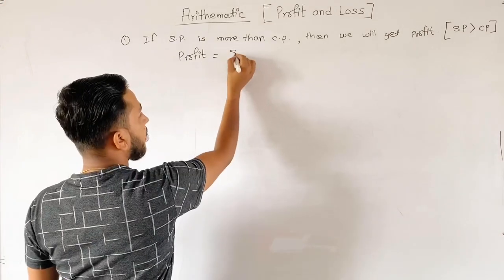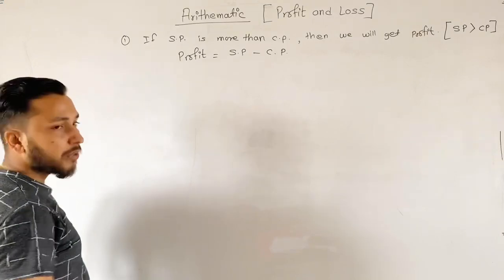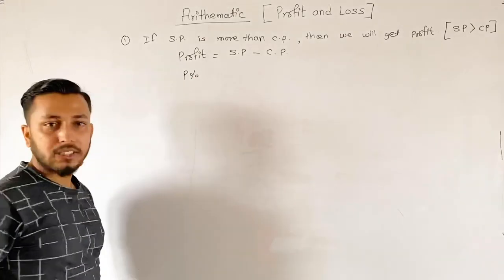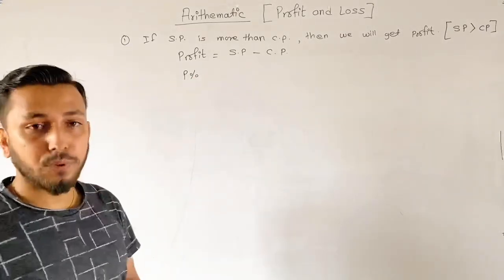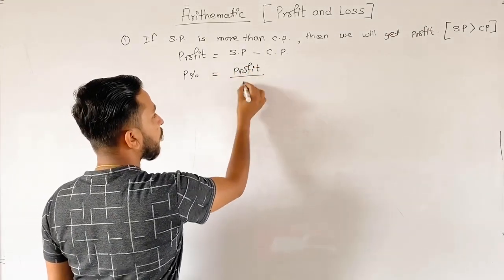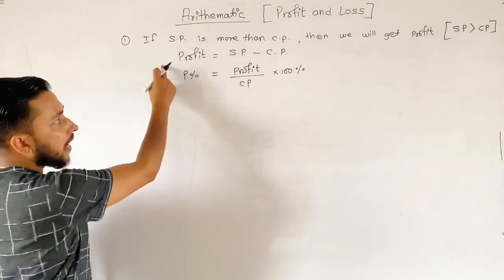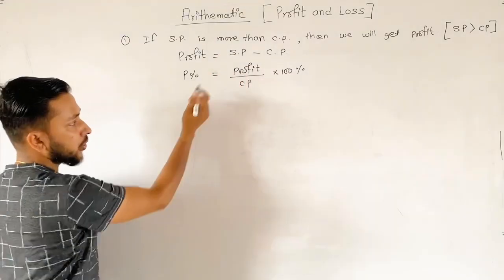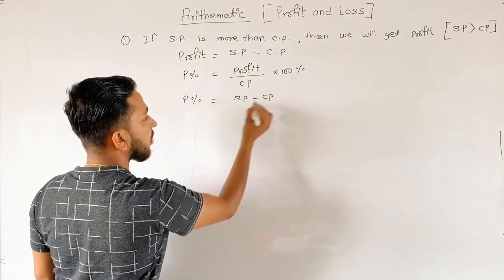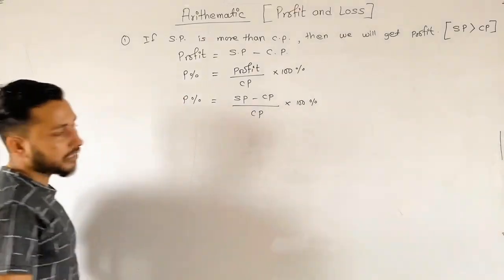Profit is the formula: Selling Price minus Cost Price. Profit percentage can also be known as Rate of Profit Percentage. The first formula is: Profit percent = Profit by CP into 100%. Similarly, Profit percent equals SP minus CP by CP into 100%.